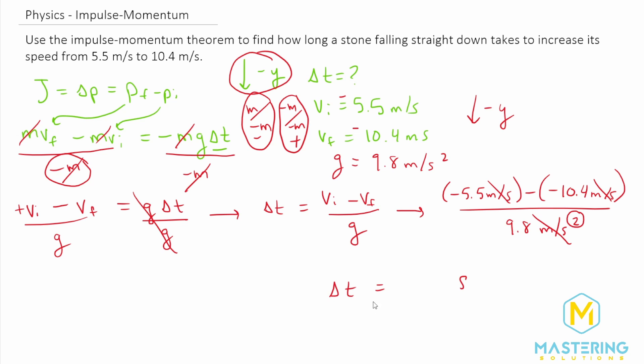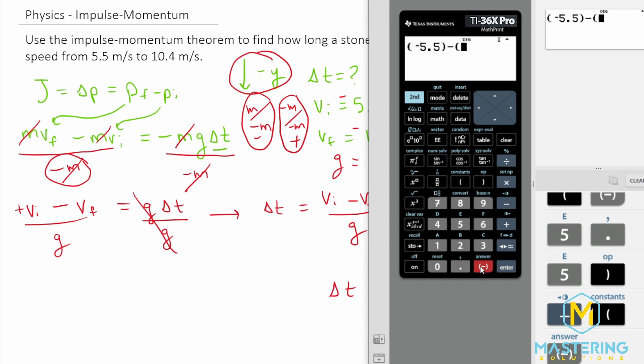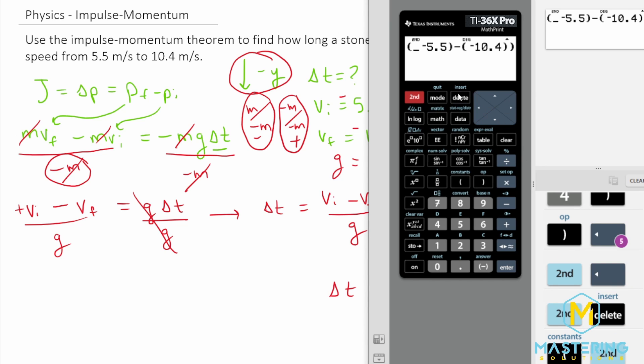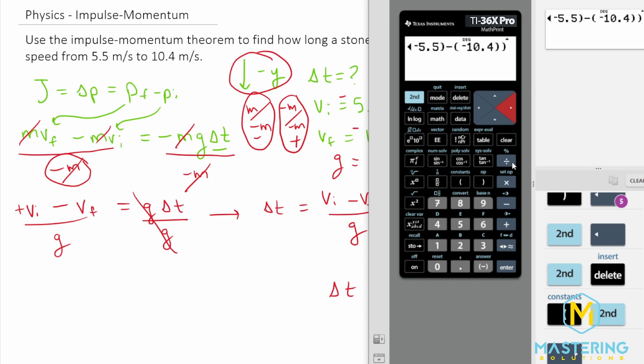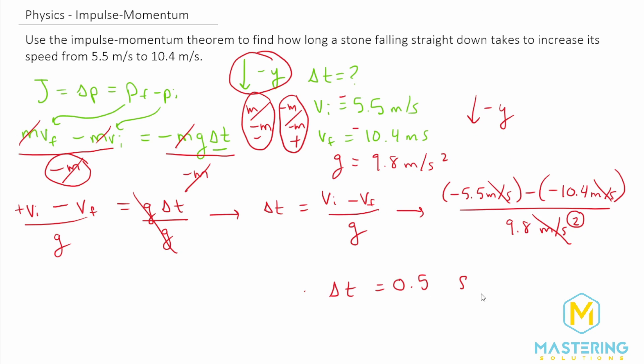So we'll be left with seconds and pulling up our calculator here, we are going to have a negative 5.5 minus a negative 10.4. Let's put in a parentheses there. There we go. And then we'll divide all of that by 9.8 meters per second squared. So we'll be left with 0.5 or a half of a second for it to go from this initial velocity to the final velocity.